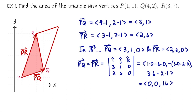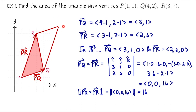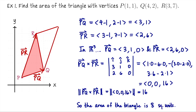We could have anticipated this result using the right-hand rule: put your fingers parallel to PQ and sweep toward PR, and your thumb points in the positive z-direction. The length of PQ cross PR is the length of (0,0,16), which is 16 units. So the parallelogram has area 16 square units, and our triangle has area 8 square units. To use a cross product for area in R2, embed the vectors in R3 with z = 0.